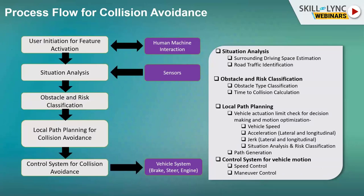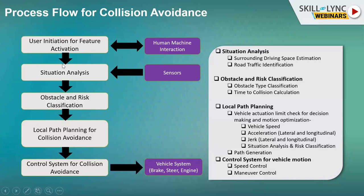Now let's discuss specifically how collision avoidance works. This is the process flow for collision avoidance. It all starts with HMI — Human Machine Interface. Through HMI user input, the driver interacts with the vehicle system for the desired functionality, which here is collision avoidance. After user interaction with the HMI, there will be situation analysis, which consists of surrounding drive space estimation, road traffic identification, etc.